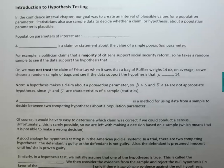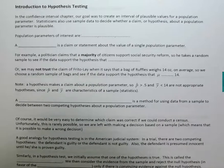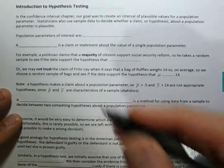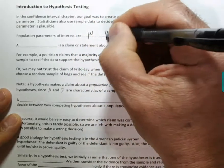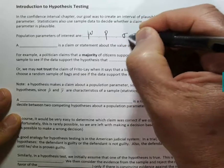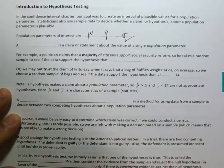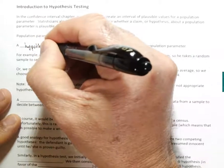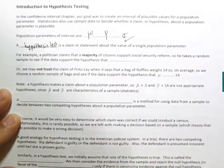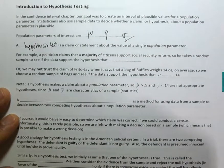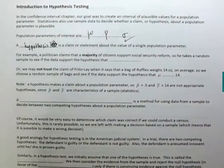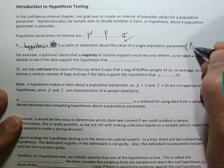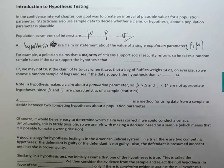The last video will cover how to perform hypothesis testing for the proportion. The population parameters of interest in this chapter are the mean and the proportion. There is also the standard deviation, but we will not be doing that one. A hypothesis is a claim or a statement about the value of a single population parameter — again, the population proportion and the population mean.